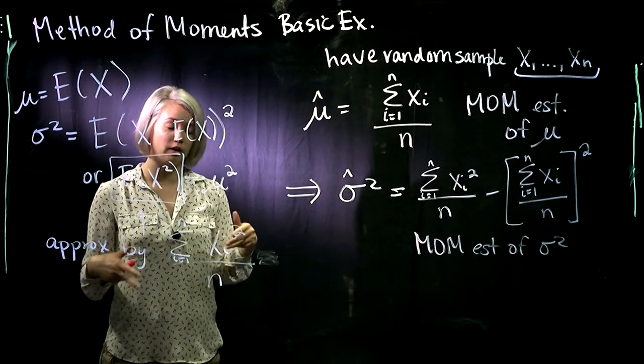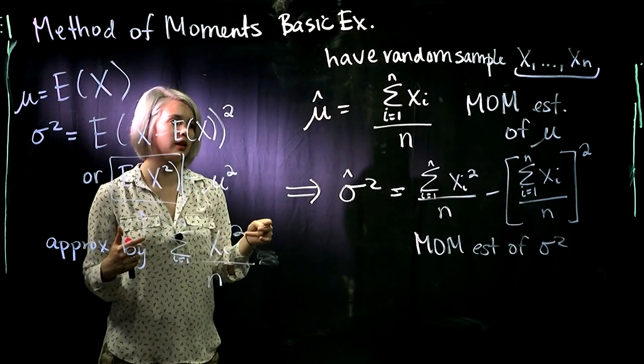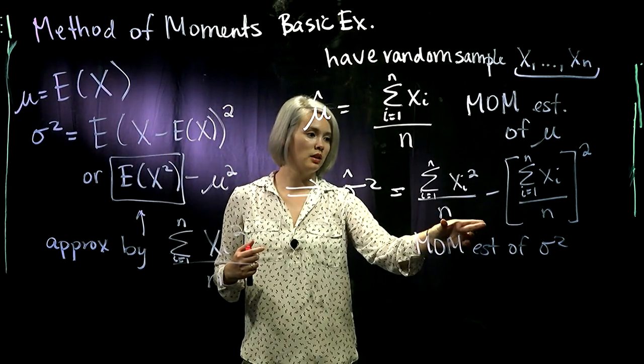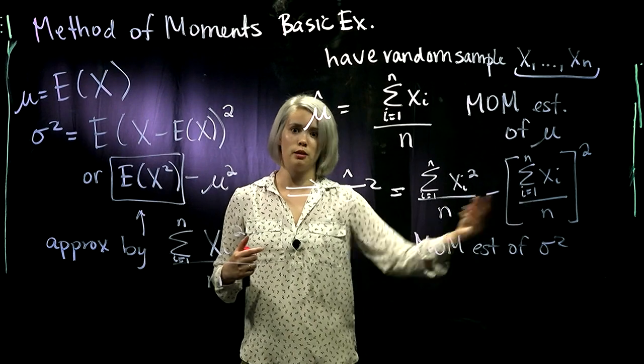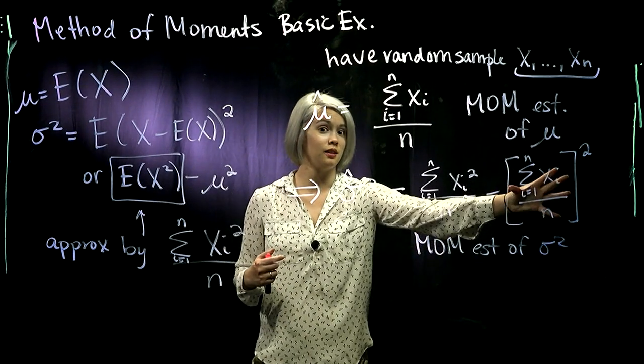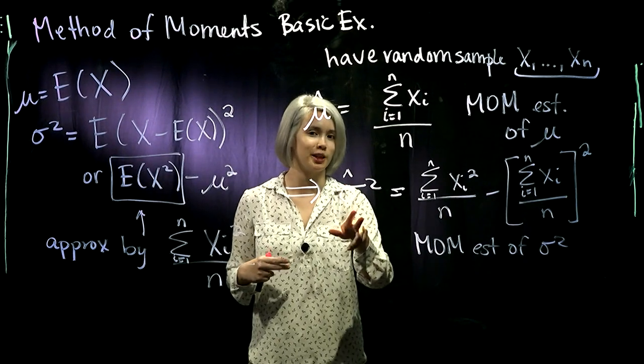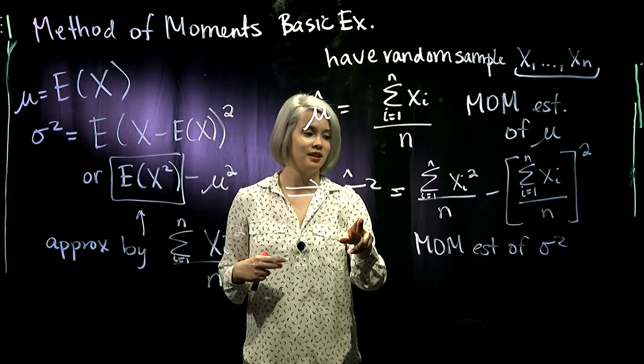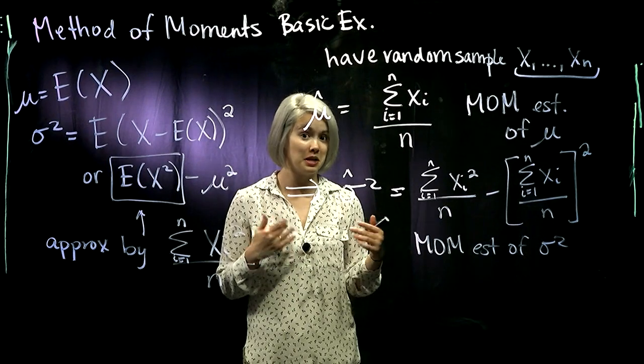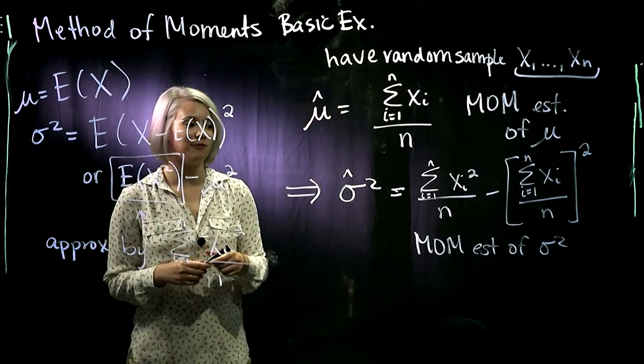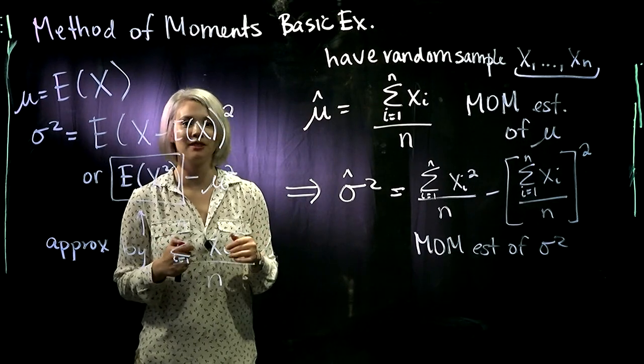So one quick downfall about method of moments is let's look at this estimator of σ². We have something minus something. If this is bigger than that, it could end up that σ²'s estimate is actually negative. So that's not a good thing because, of course, variance has to be positive. So that's kind of a problem with the method of moments.